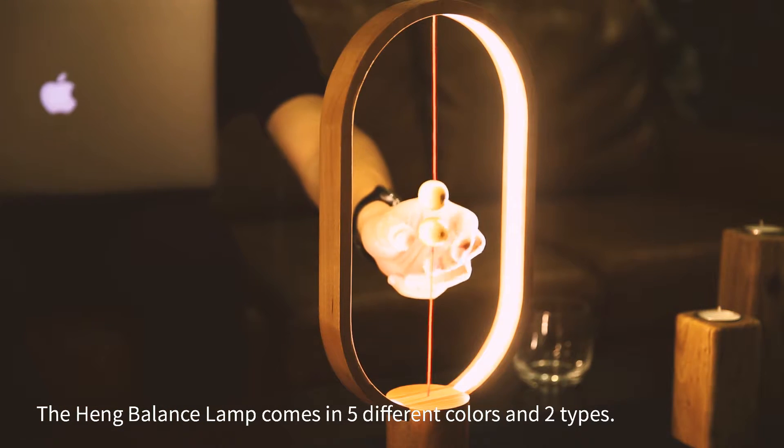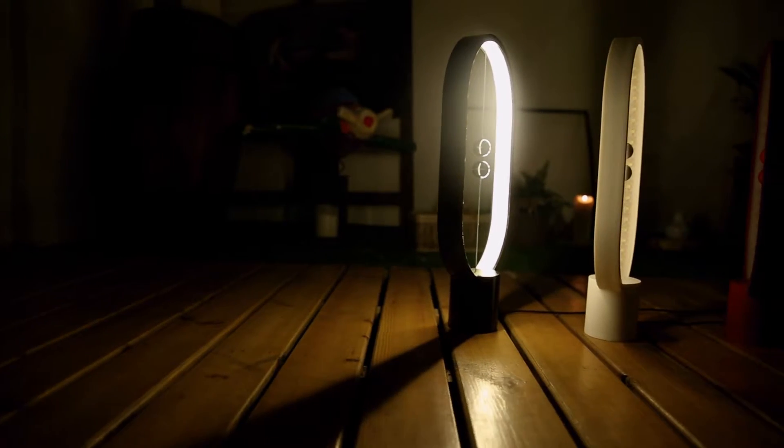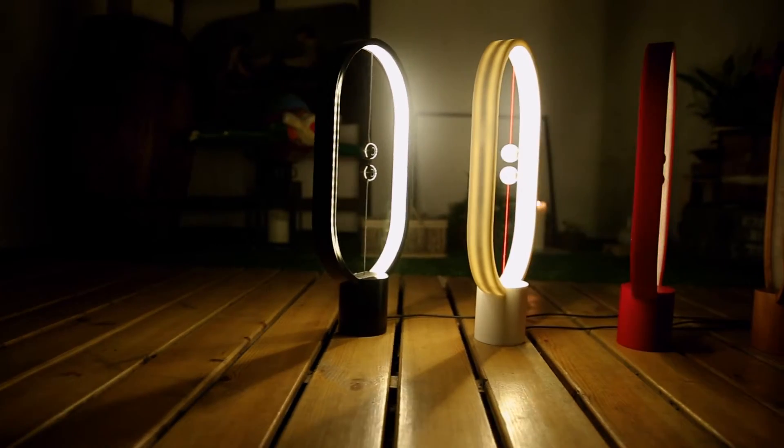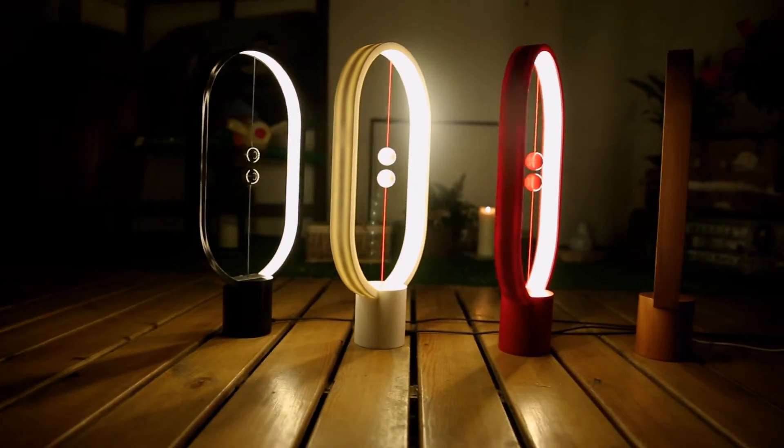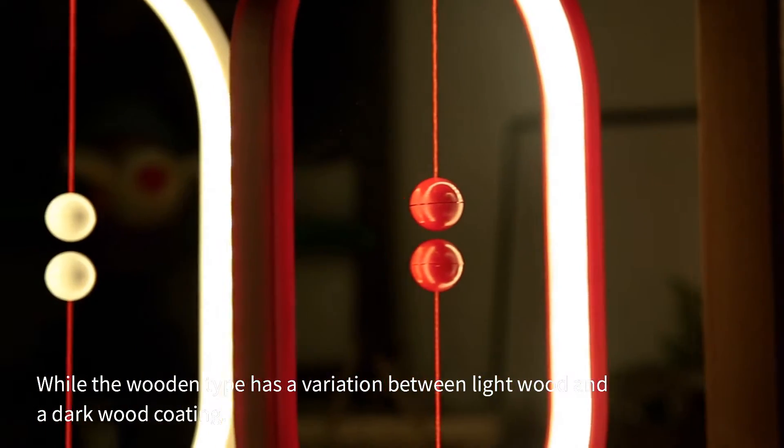The Heng Balance lamp comes in five different colors and two different types. The plastic types come in black, white, and red, while the wooden types have a variation between light wood and a dark wood coating.